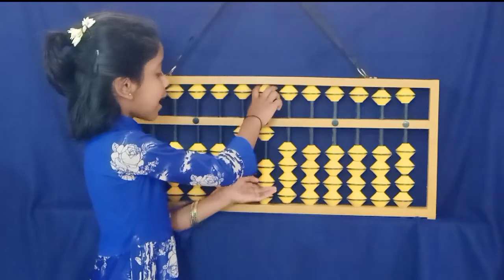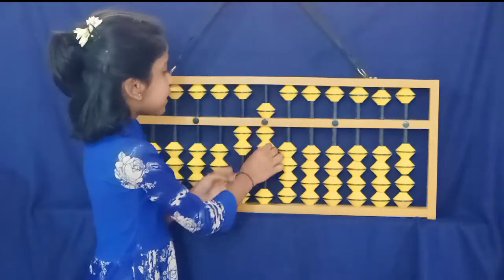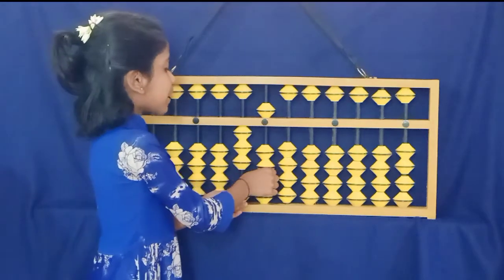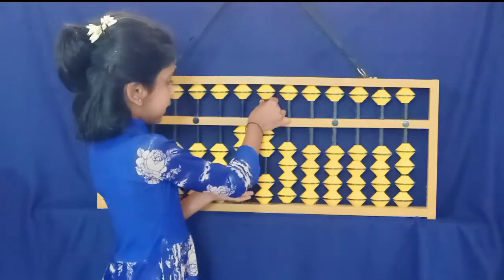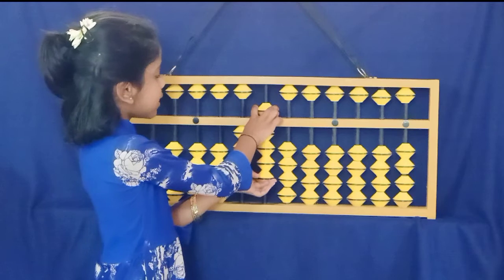7-4s are 28, 7-5s are 35, 7-6s are 42, 7-7s are 49.